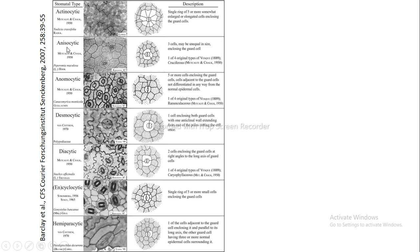The second type is anisocytic. 'Aniso' means dissimilar, so here the two guard cells are surrounded by three cells which are unequal in size and enclose the guard cells.